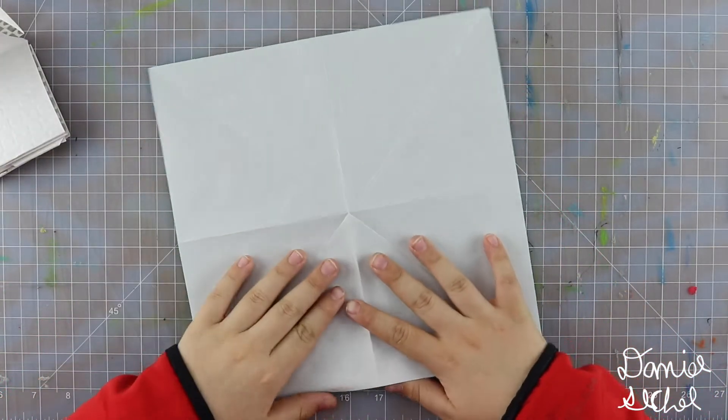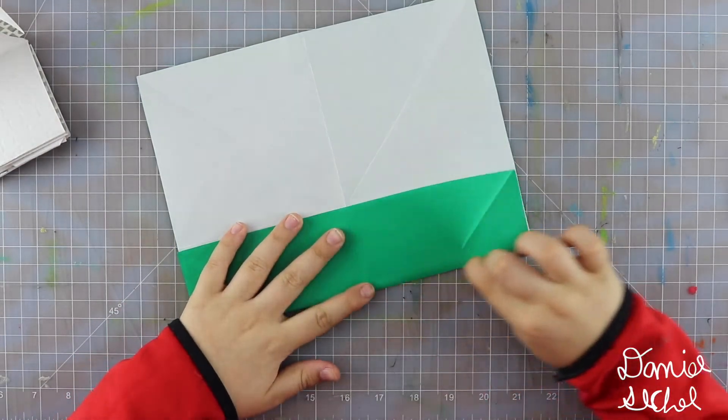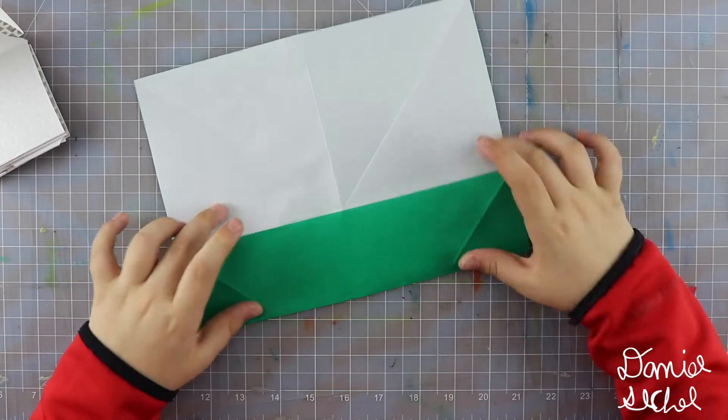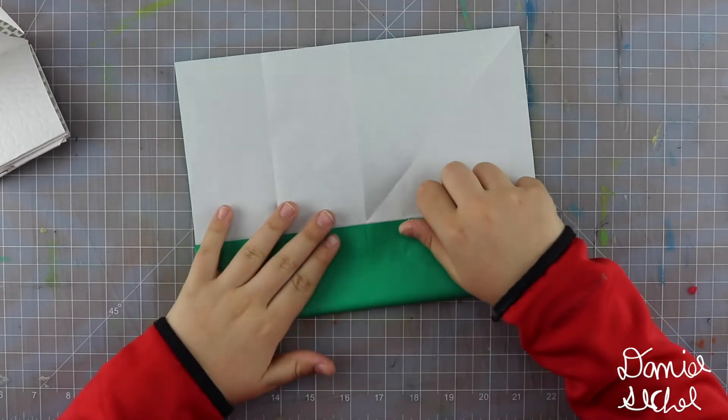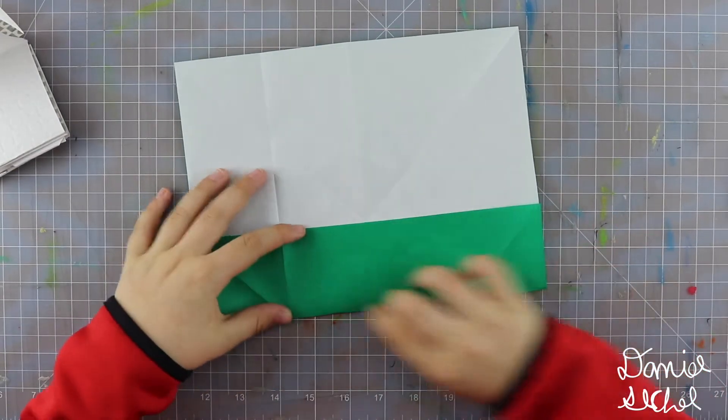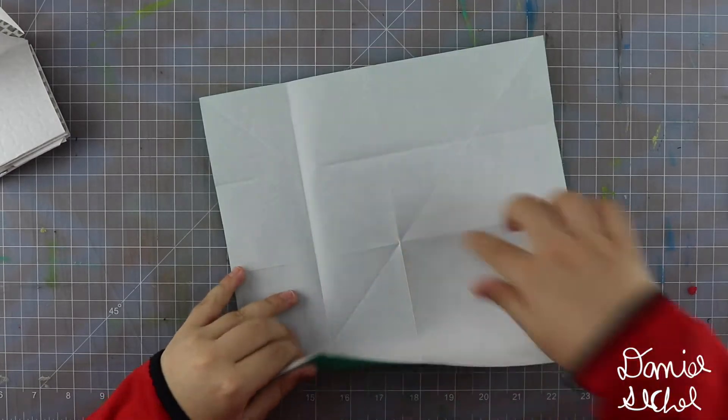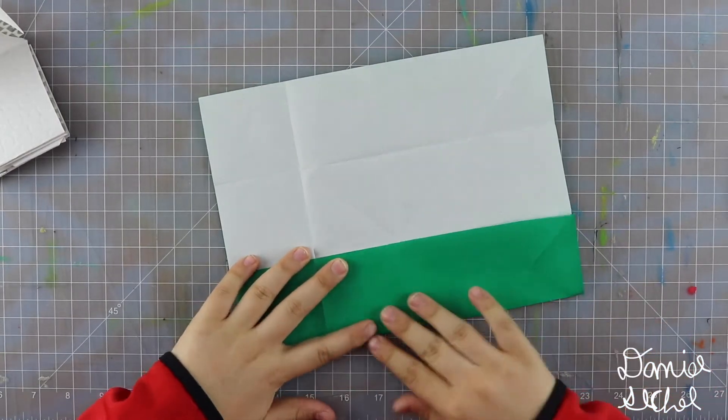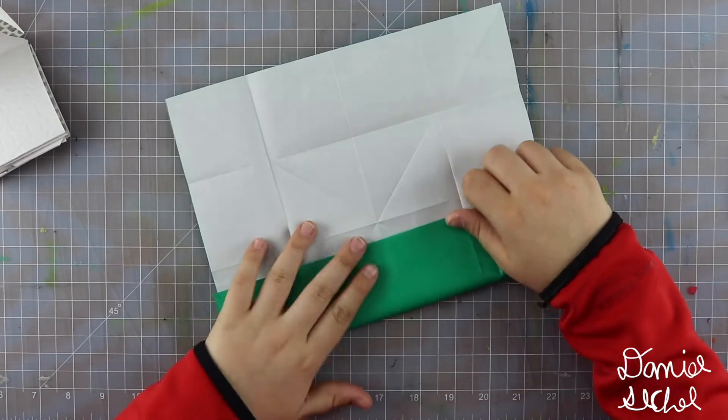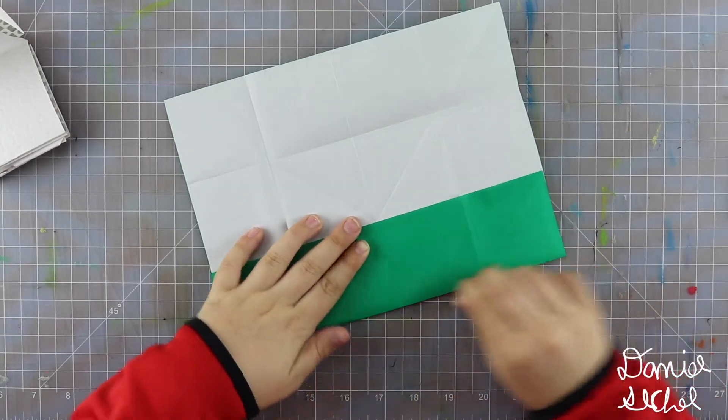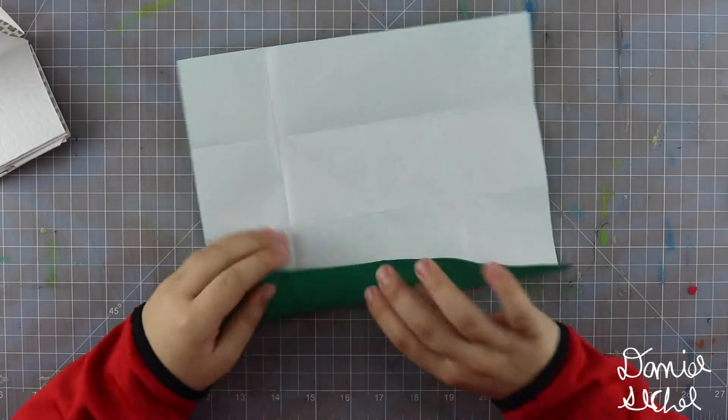Unfold, now turn back over, fold this edge to that crease. Unfold, rotate, and fold this edge to that crease. Unfold, do that again, so this crease to that crease. Unfold, one more time, fold this edge to that crease.